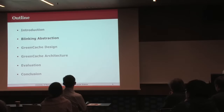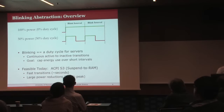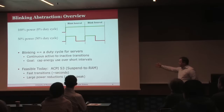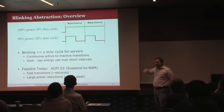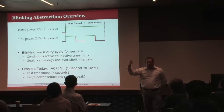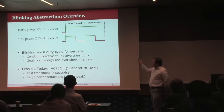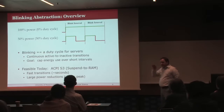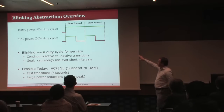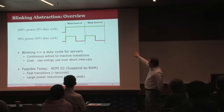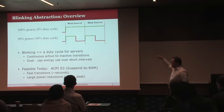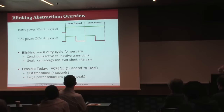Now here comes the new stuff: blinking. What is blinking? If you look at ACPI S3, Suspend-to-RAM, you can actually turn your computer on and off very quickly. It's duty cycling — something the sensor folks have been doing for a long time in wireless sensor networks. We can apply this to caches as well. If you have 100% duty cycle, you have full power. If you only have 50% power available, you turn your cache on and off in a blinking interval — on for half the period, off for half the period.